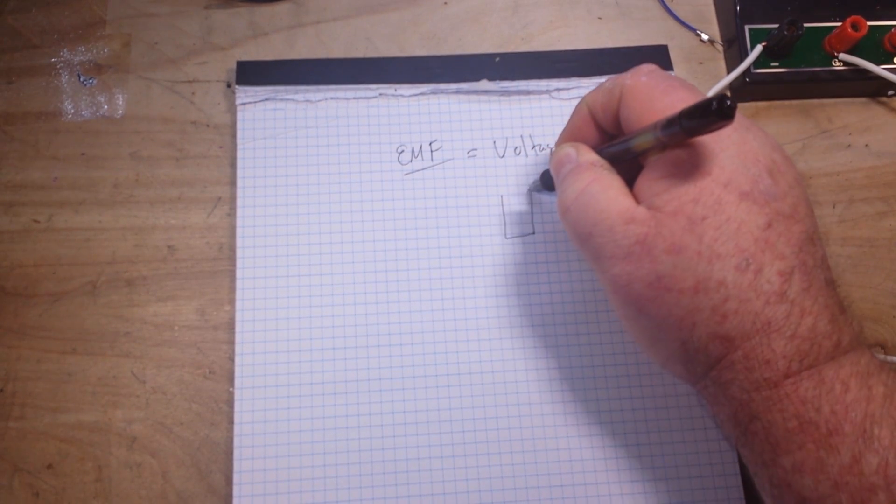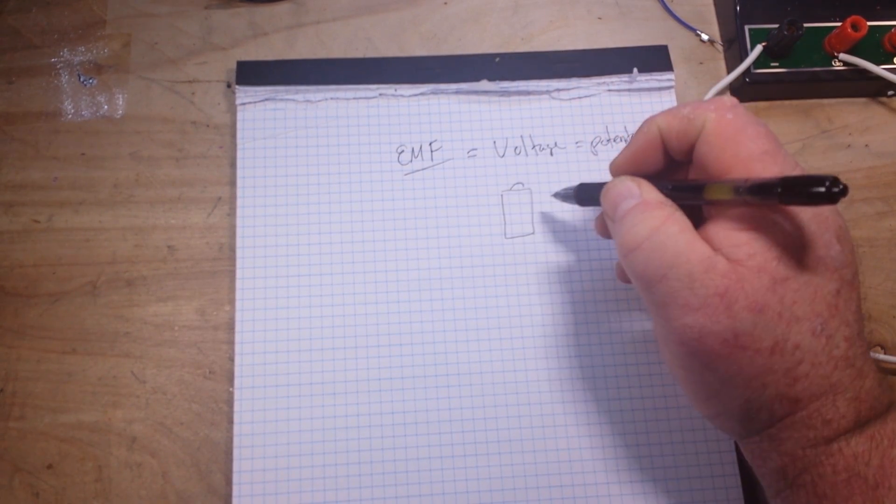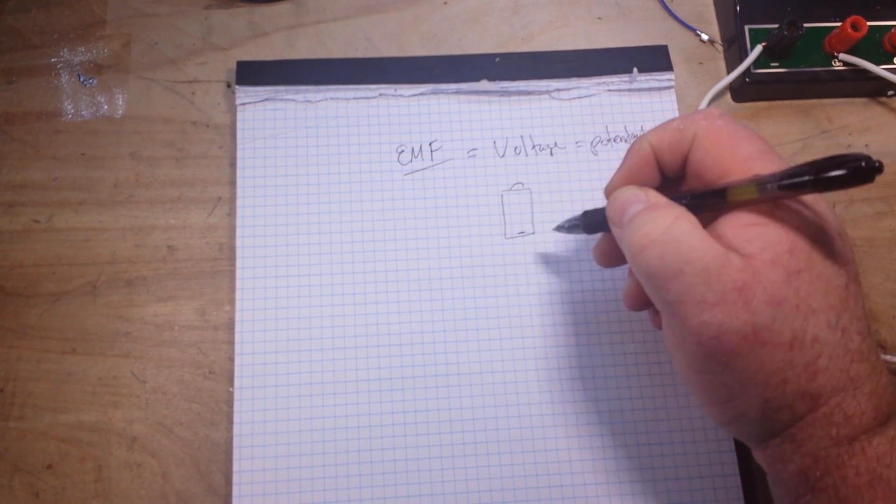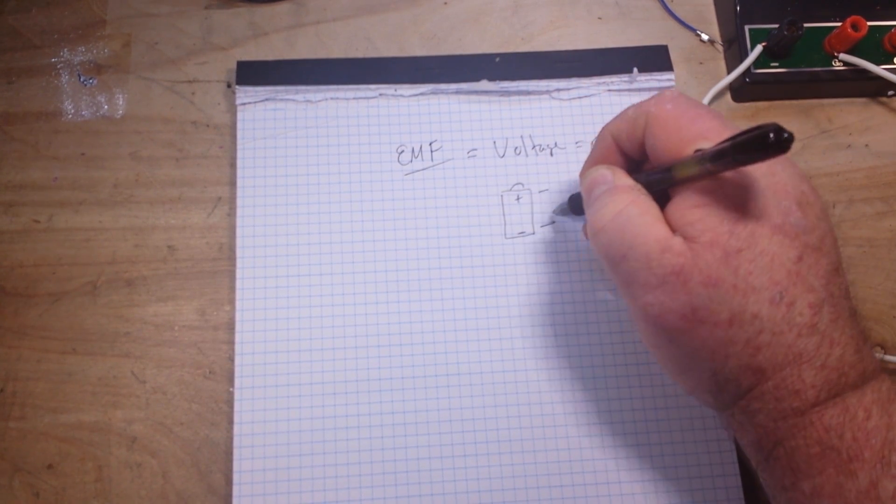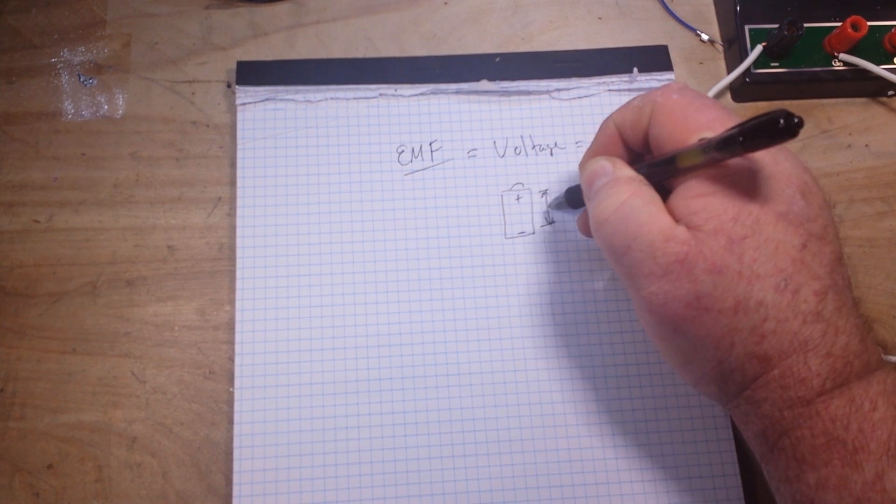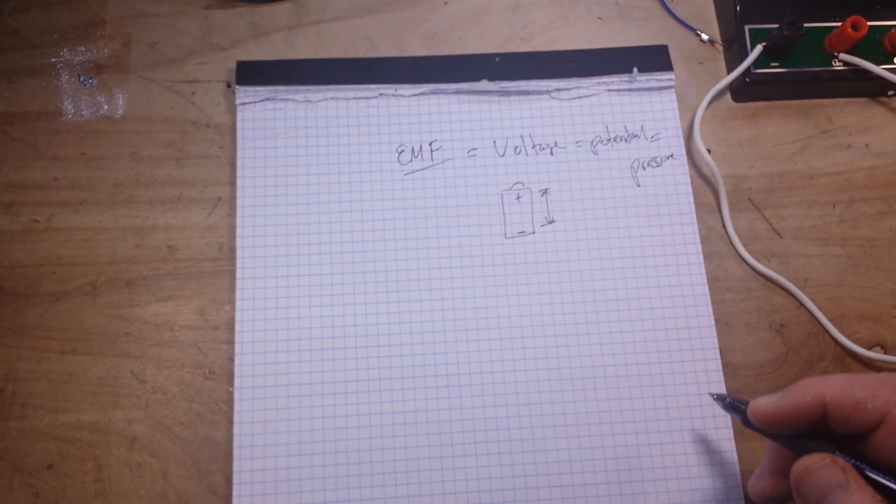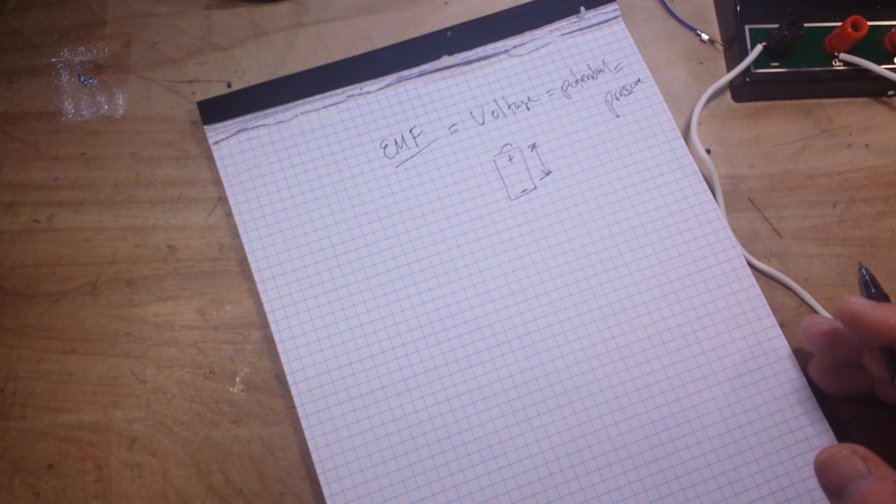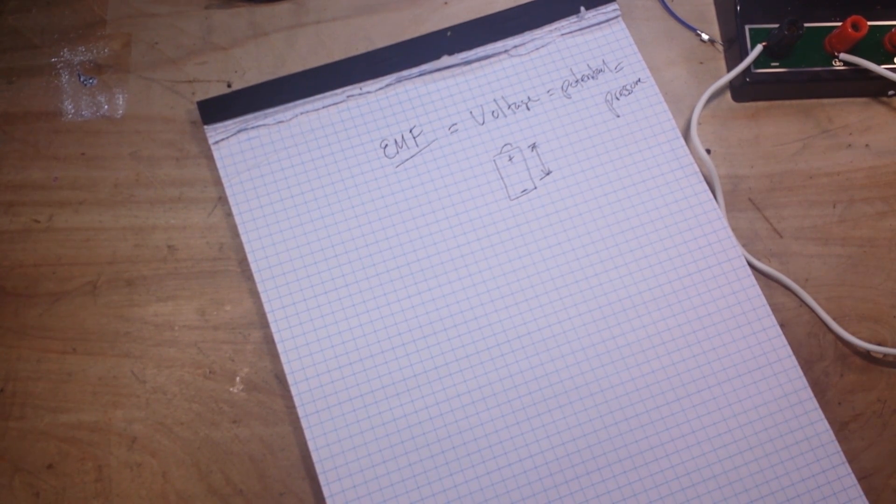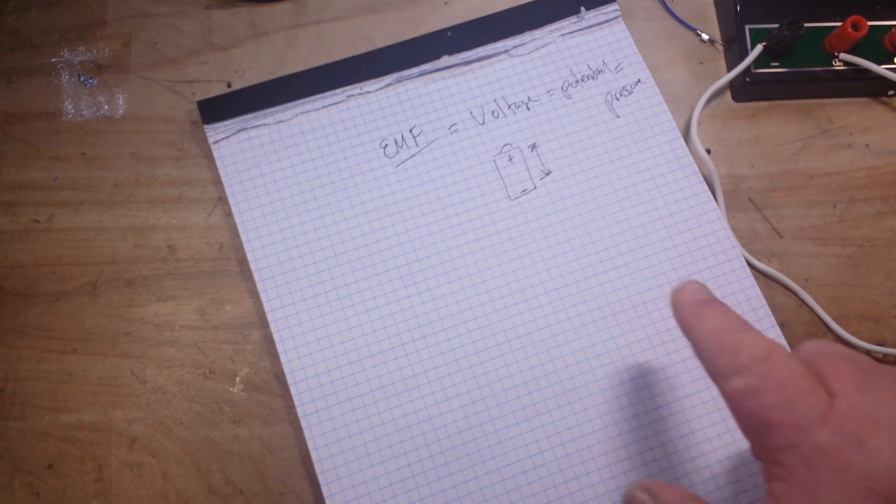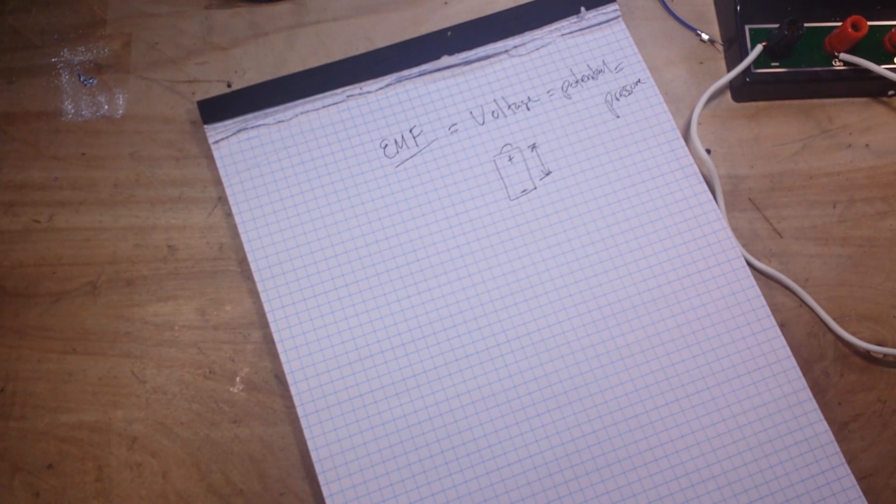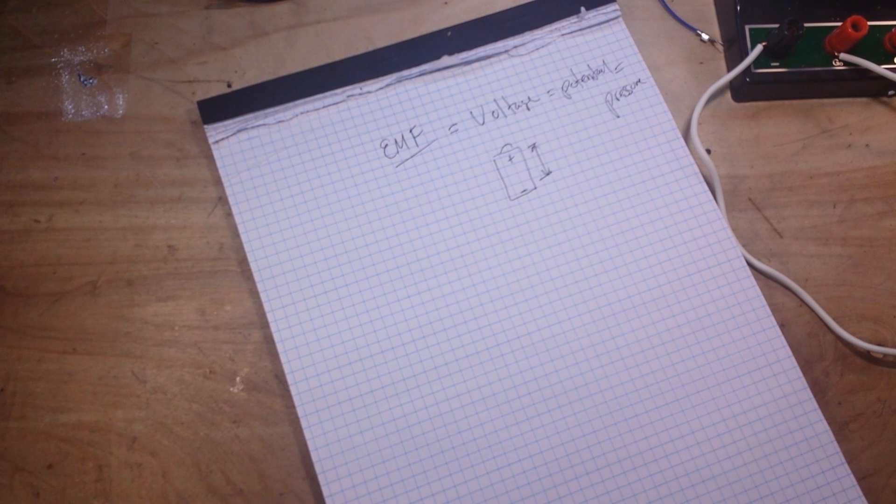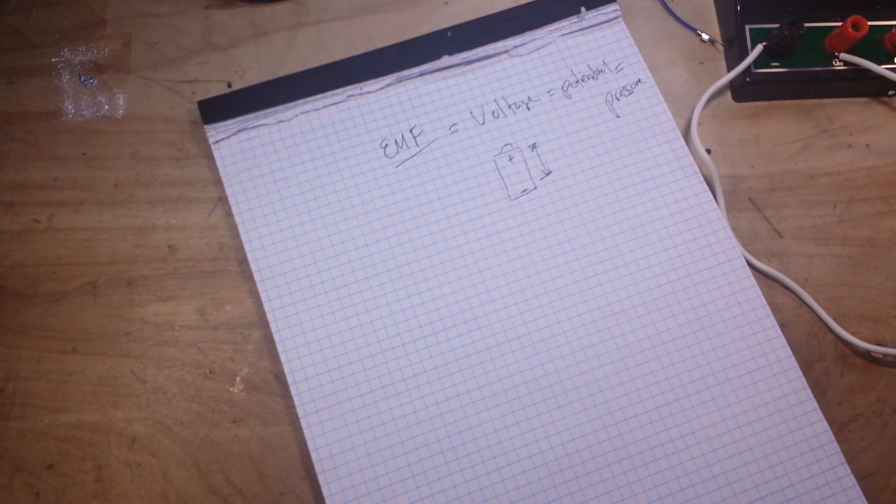So if we have a cell, and the cell is negatively charged here, positively charged here, then this difference between the charges is the potential energy. Oh, excuse me, is the electromagnetic force. So we can generate an electromagnetic force with a battery. We can generate an electromotive force. I said magnetic, I meant motive force. In many different ways.